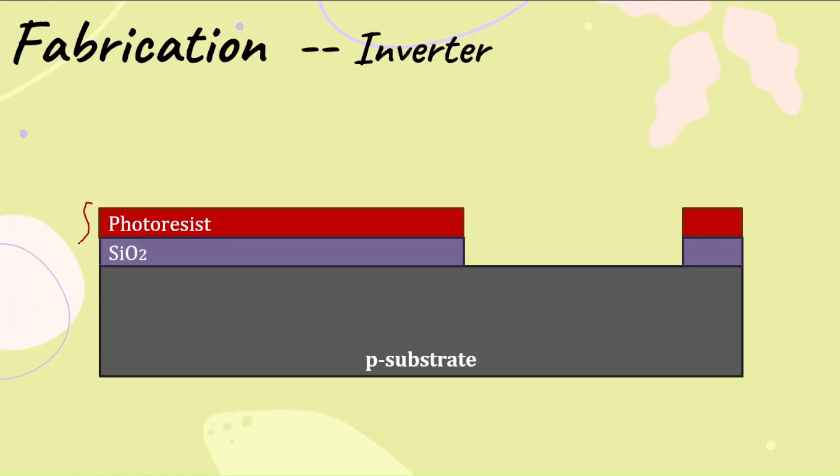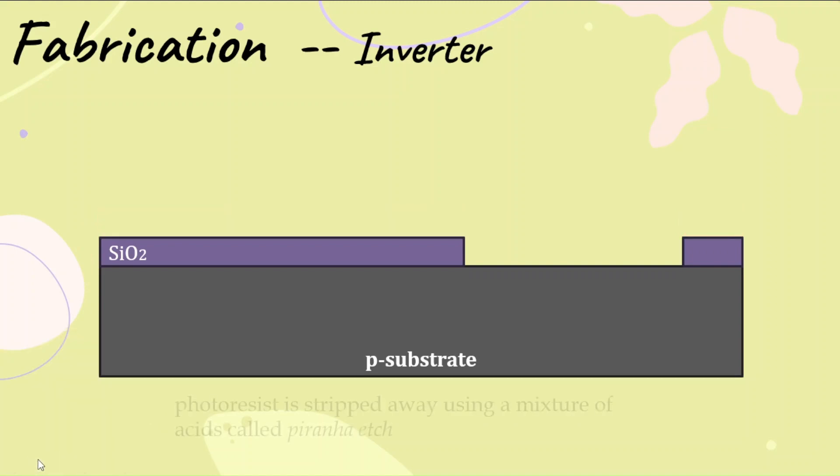Once it is etched off, this is how the structure looks. After this, in the next step, all the photoresist layer is removed using a process called piranha etching.